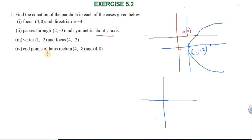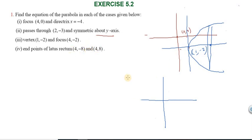Fourth subdivision: The endpoints of the latus rectum are given as (4, 8) and (4, −8). The latus rectum is the chord through the focus. Since both points have x = 4, the focus lies on x = 4. The midpoint of (4, 8) and (4, −8) gives the focus as (4, 0).